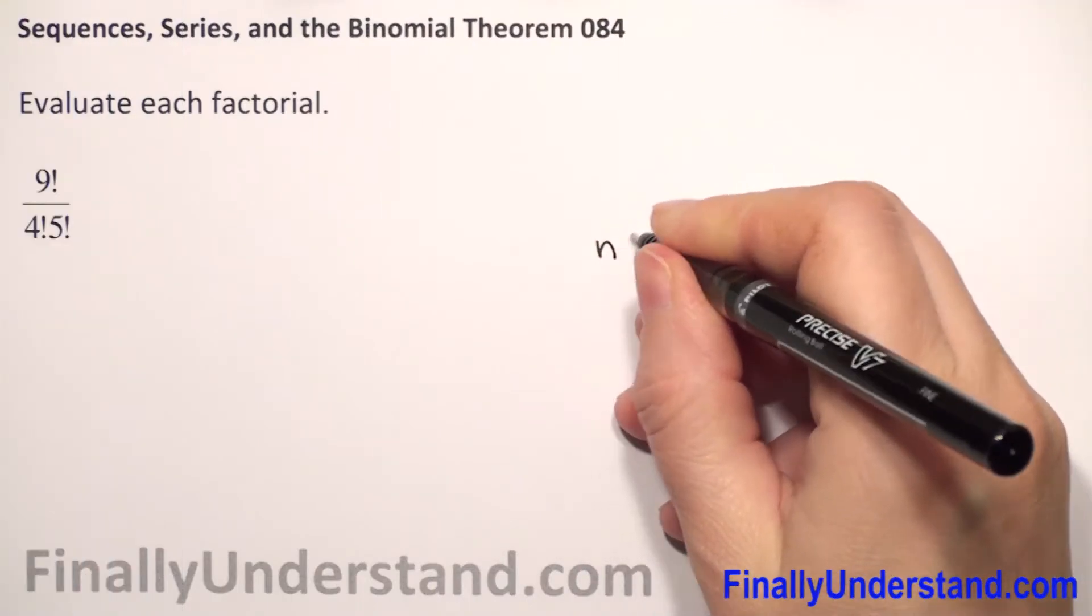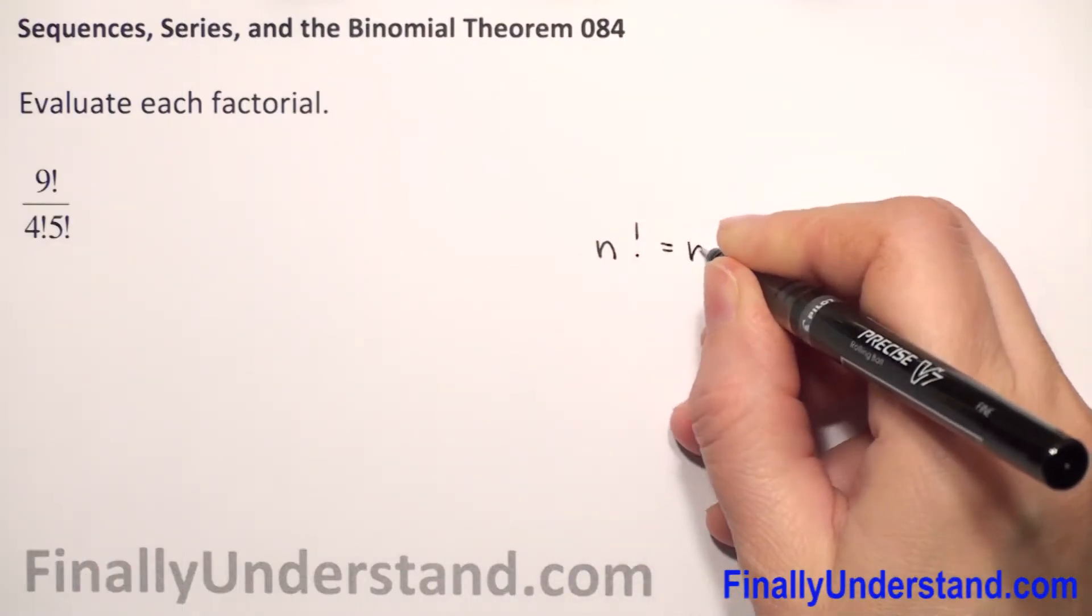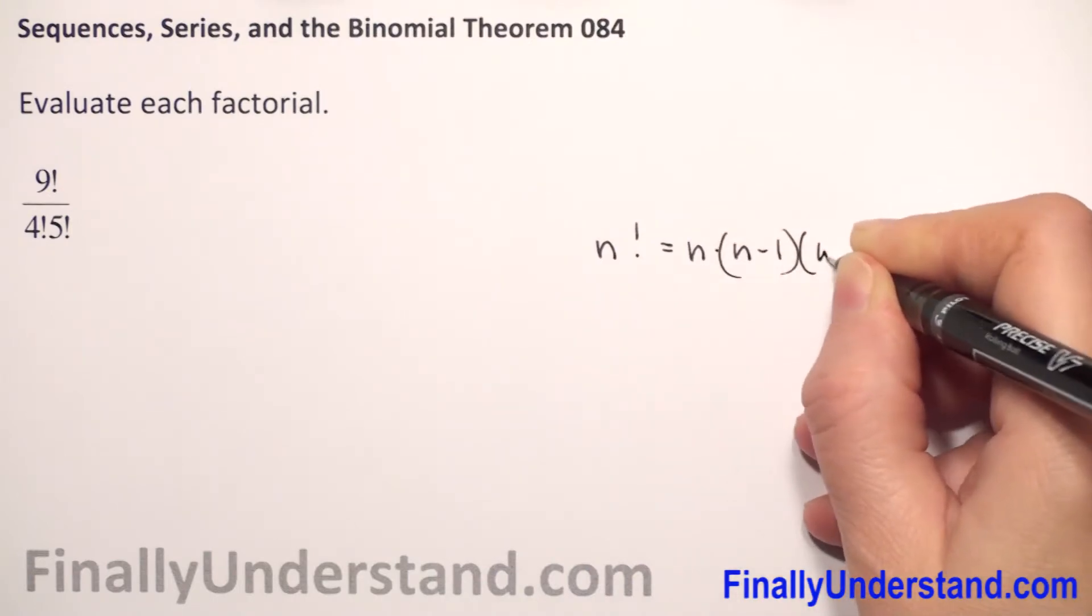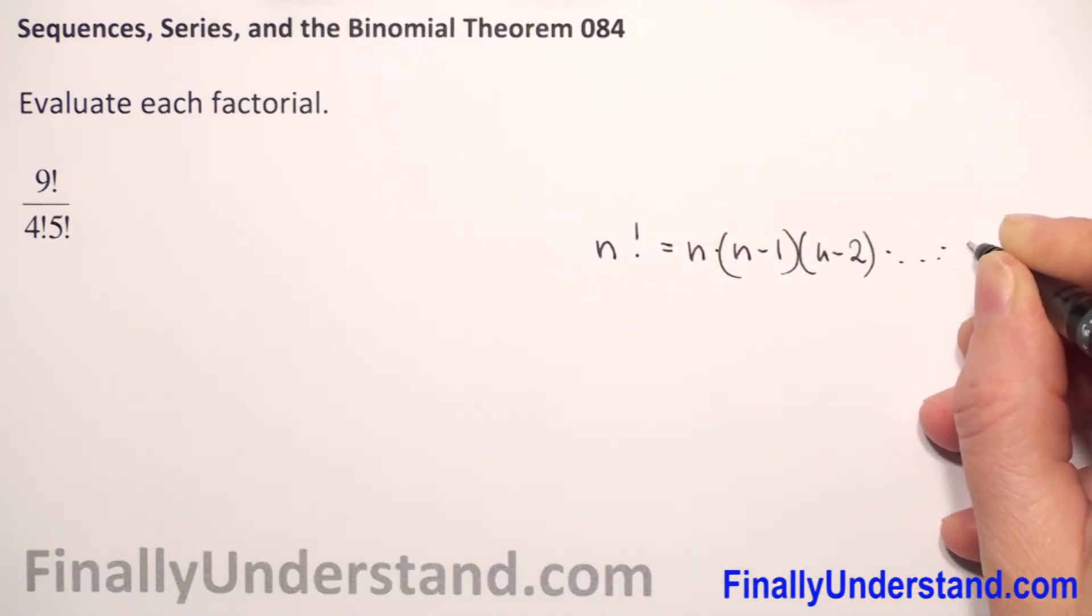We have to evaluate factorial. Let me remind you that n factorial is n times n minus 1 times n minus 2 times 3 times 2 times 1. n factorial represents the product of the first n positive integers.